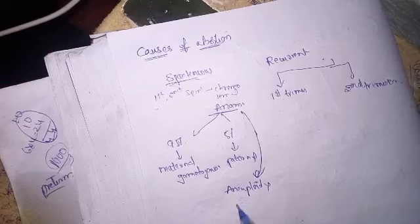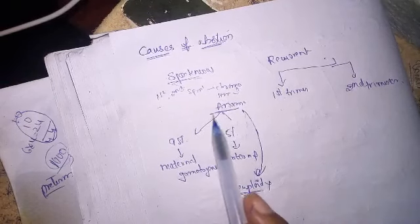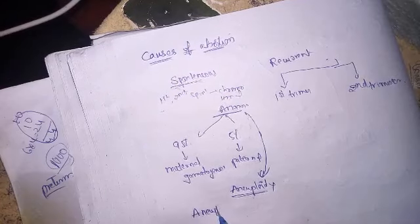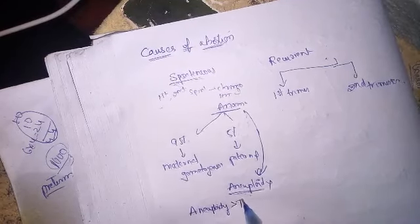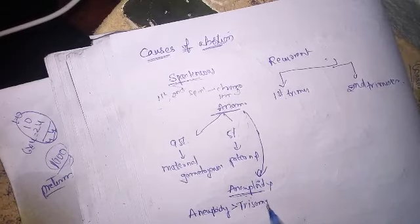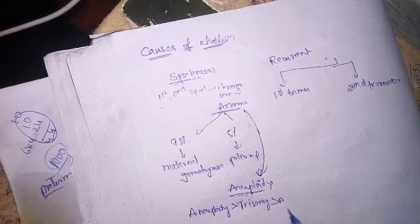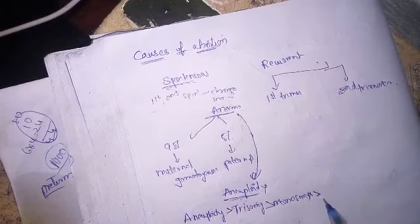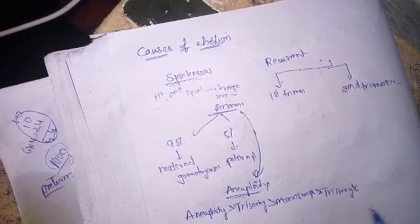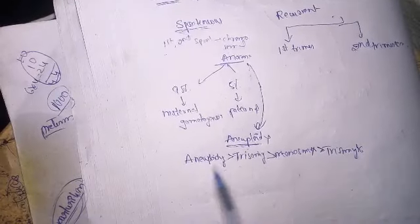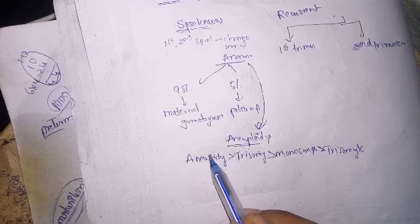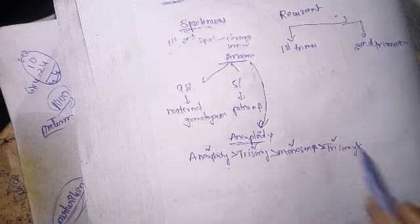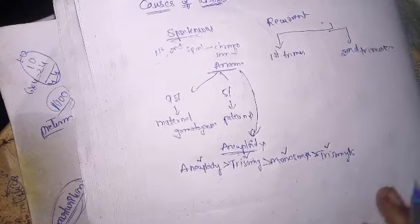If we take in order the causes of first trimester and second trimester spontaneous abortion: aneuploidy is most common, greater than trisomy, greater than monosomy X, greater than trisomy system. So if given these four as answer options, the first best answer is aneuploidy, second is trisomy, third is monosomy X, and fourth is trisomy system.